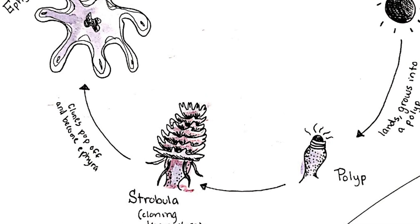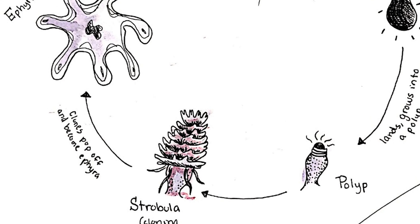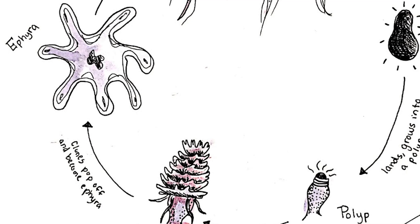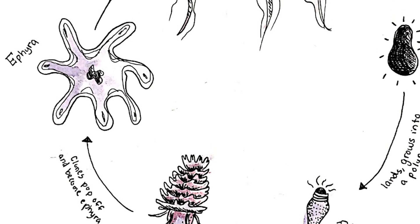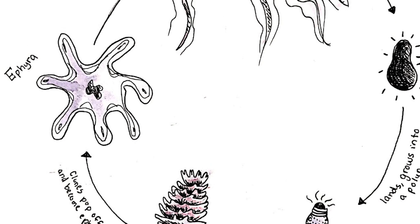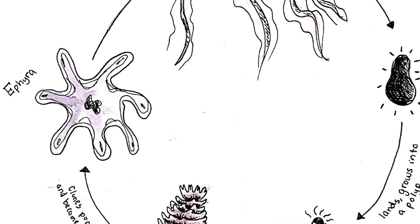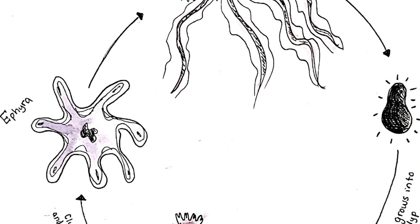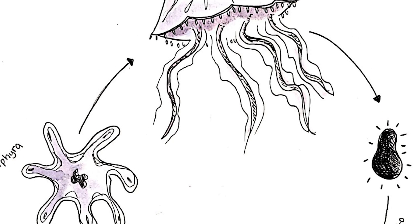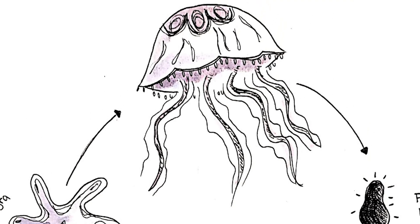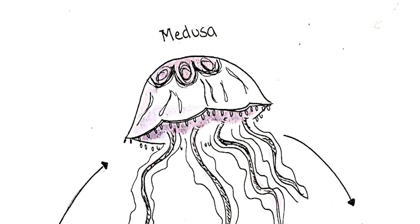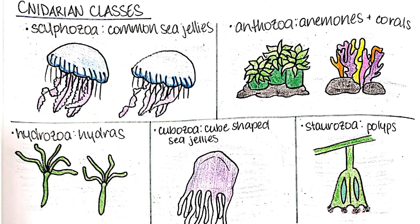That polyp then starts becoming what we call a strobula. The strobula is a polyp that is cloning itself — it is making new versions of itself. Once it has created a long enough strobula, those individual clones pop off as a phyra. A phyra is like a juvenile jellyfish, and the phyra then turn into the adult reproductive form of the sea jelly, which we call a medusa.